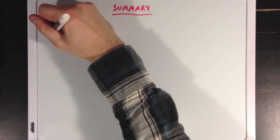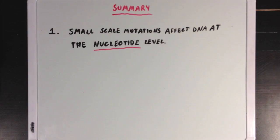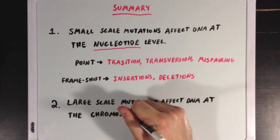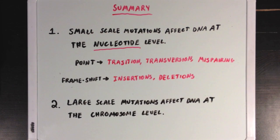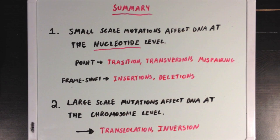So what did we learn? Well, first we learned that small-scale mutations affect DNA at the nucleotide level. And of these small-scale mutations, we have point mutations, which can be caused by transitions, transversions, and mispairings. And we also have frameshift mutations, which can be caused by insertions or deletions. Next, we talked about large-scale mutations, which affect DNA at the chromosomal level. And the two large-scale mutations we talked about were translocation and inversion.